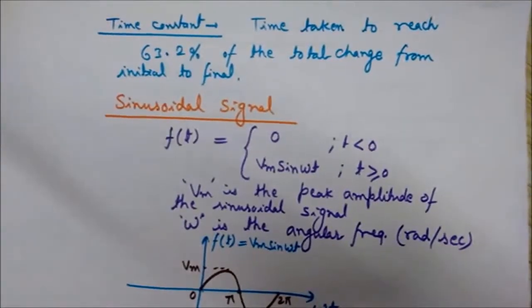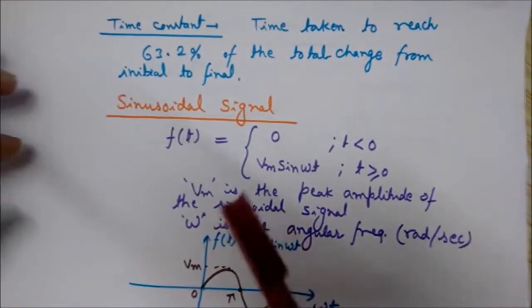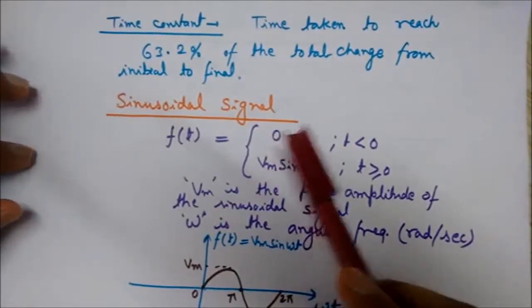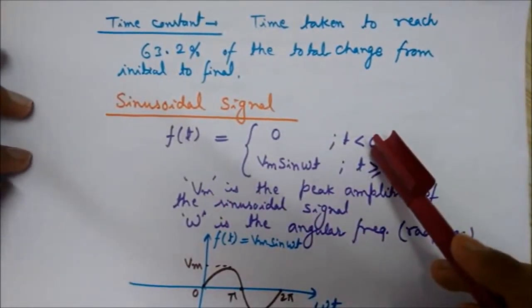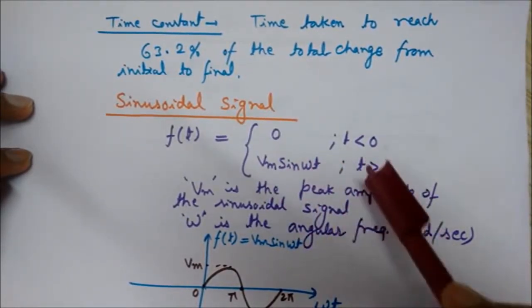Now let's come to another important signal known as a sinusoidal signal. The sinusoidal signal is defined as f(t) = 0 for t < 0, and f(t) = Vm sin(ωt) for t ≥ 0.